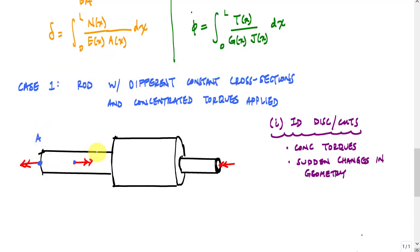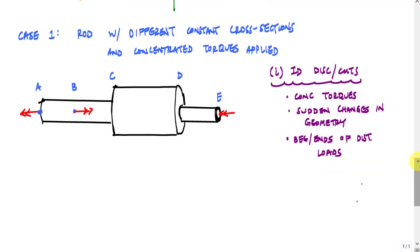I have another concentrated torque here, so I'll call that B. That's a discontinuity. I have this sudden jump in the cross sectional area here. I'll call that point C. And then here I have another sudden jump, a decreasing area. I'll call this point D. And then here I have a concentrated torque. The other discontinuity locations that you have to be aware of, the beginnings and ends of distributed loads. But we don't have any here, so we'll just ignore that for now. I've identified my discontinuities here. In this case, I've got one, two, three, four, five discontinuities.